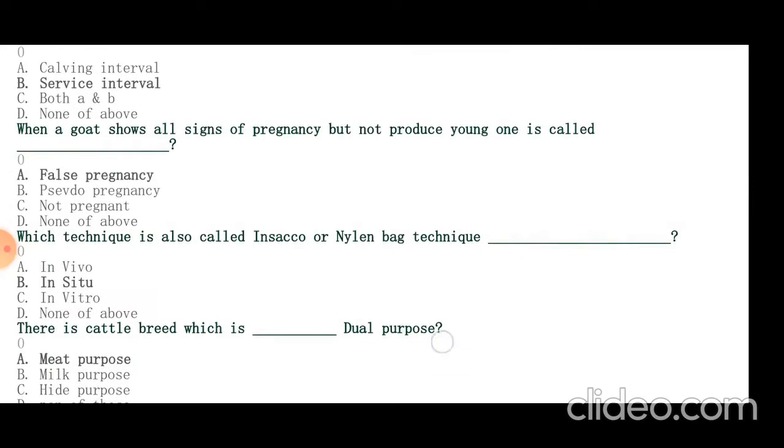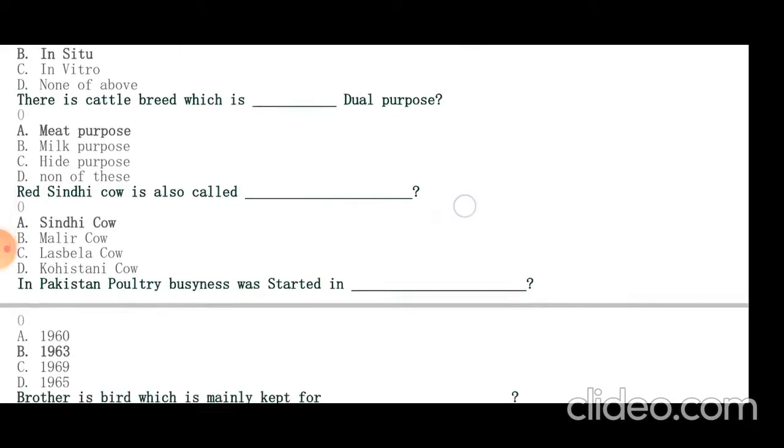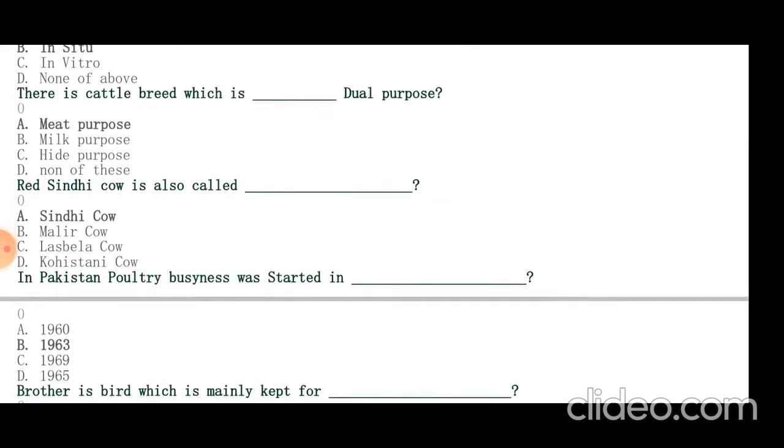There is a cattle breed which is dual purpose for meat and milk. Red Sindhi cow is also called Sindhi cow. Pakistan poultry business was started in 1963 by Pakistan International Airlines PIA in Rahim Yar Khan.